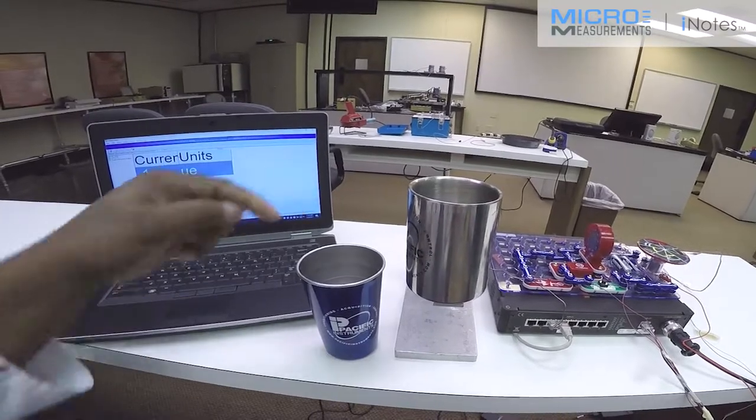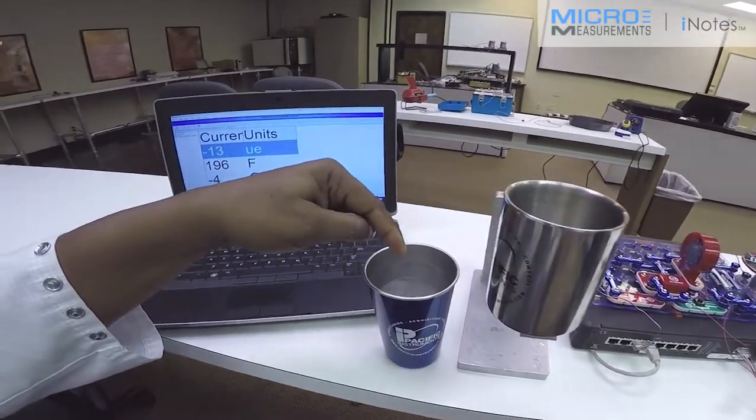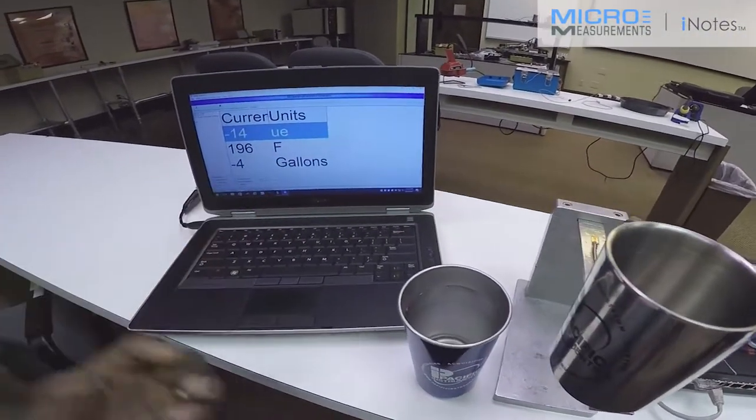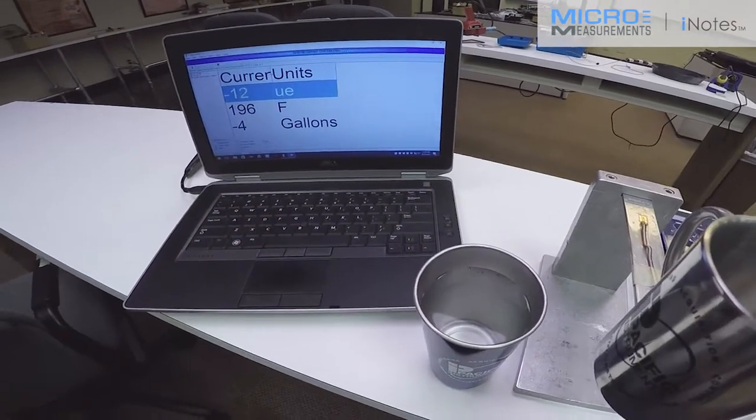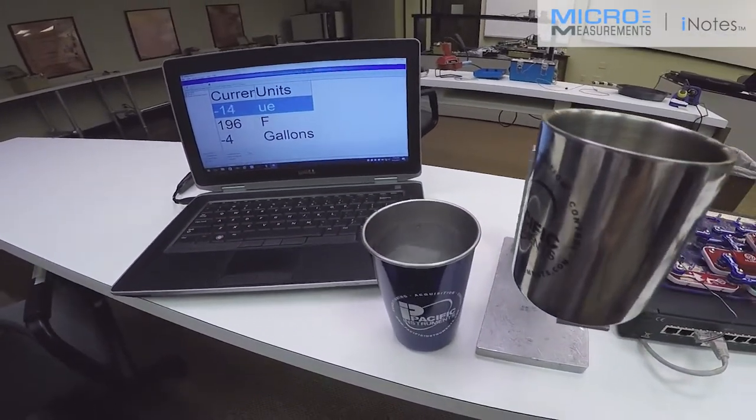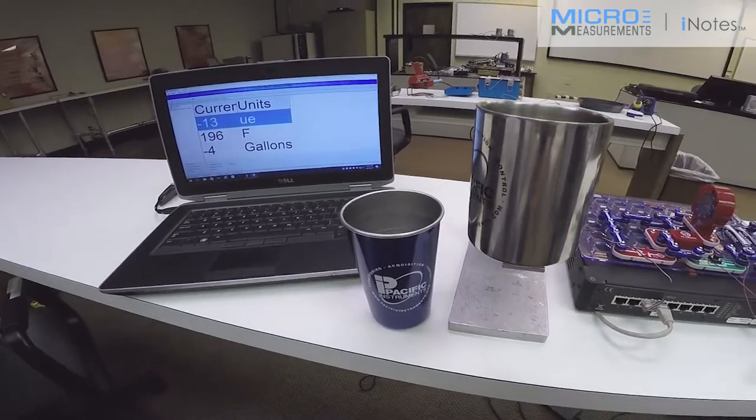So what we're going to do with the water contained in this cup is we're going to simulate the amount of force needed to tell this relay, hey, I've reached the critical amount of water in the tub. Please shut off the water.